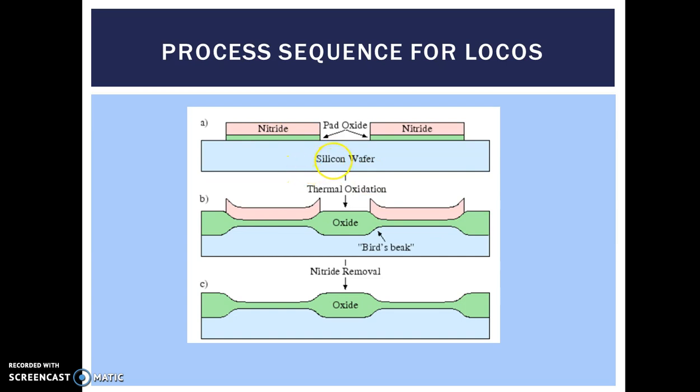After the oxidation process is finished, the last step is the nitride removal. Now here you can see that this bird's beak, which is this thermally grown oxide, is actually encroaching into the active region area, and that is called the bird's beak.